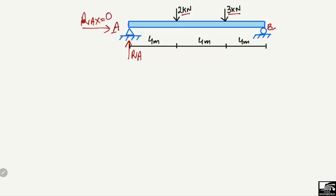The horizontal reaction will be equal to zero because there is no horizontal load acting on this beam, so we only have RA in the vertical direction. The roller support at B can only take the vertical reaction RB and cannot resist any horizontal load.